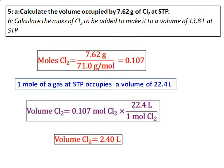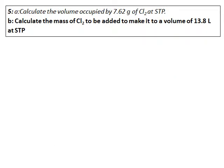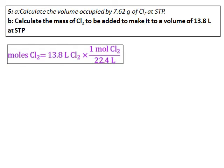Now this is only the first part, we will go ahead and learn and do the B part also. The second part of the problem, calculate the mass of chlorine to be added to make it to a volume of 13.8 litres at STP. We already did the first part in the previous thing. So now the first step I will be doing is to calculate the moles of chlorine. So the volume is given, from the volume we know that one mole occupies the volume of 22.4 litres.